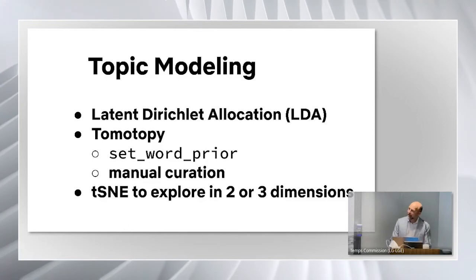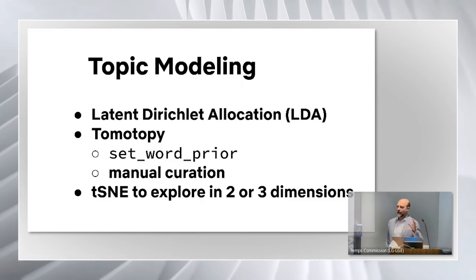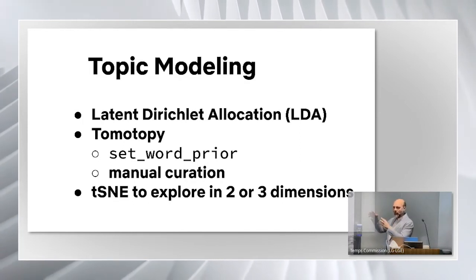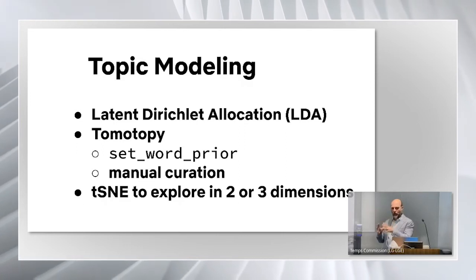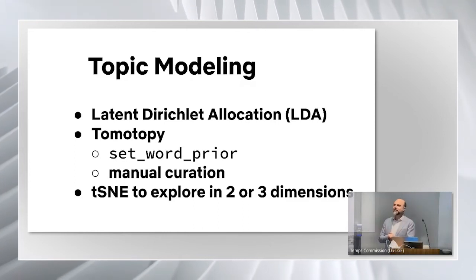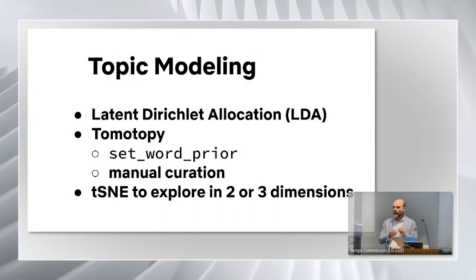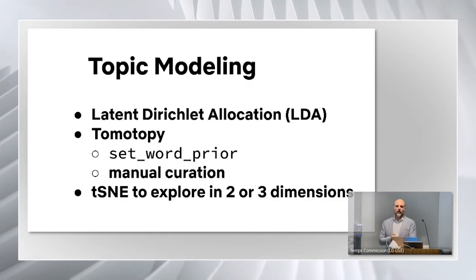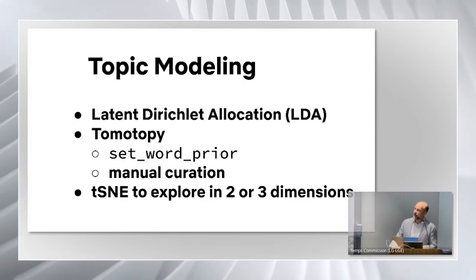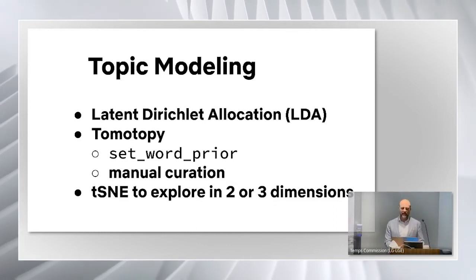t-SNE — t-distributed Stochastic Neighbor Embedding — is a dimensional reduction technique. If you have an n-dimensional vector in space and you want to show all your points on a scatter plot in two or three dimensions, t-SNE gives you a pretty good representation where your clusters make sense and points aren't all overlapping. Looking at these clusters was very interesting, and visualization people took it and ran with it. We have beautiful-looking clusters of what the Netflix business looks like.